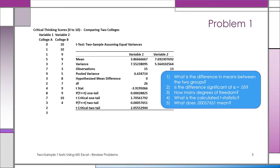First question: What is the difference in means between the two groups? Second question: Is the difference significant at alpha of 0.05, the 0.05 significance level? Question three: How many degrees of freedom is the researcher working with? Question four: What is the calculated t-statistic, sometimes called the computed t-statistic? And finally, what does that 0.00057651 mean? We'll answer these questions on the next slide.